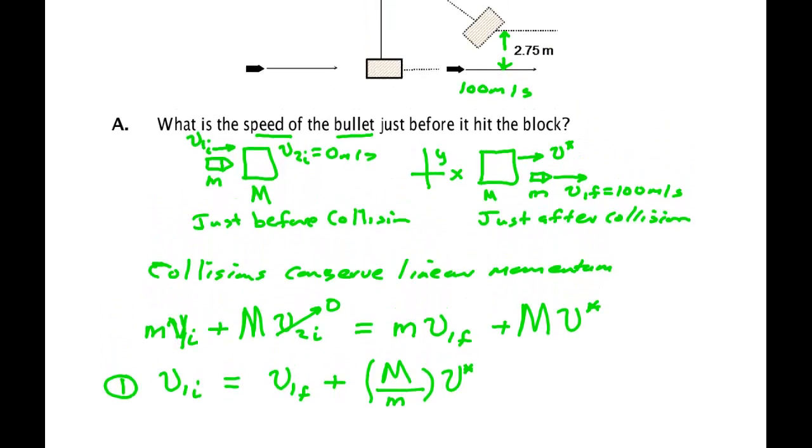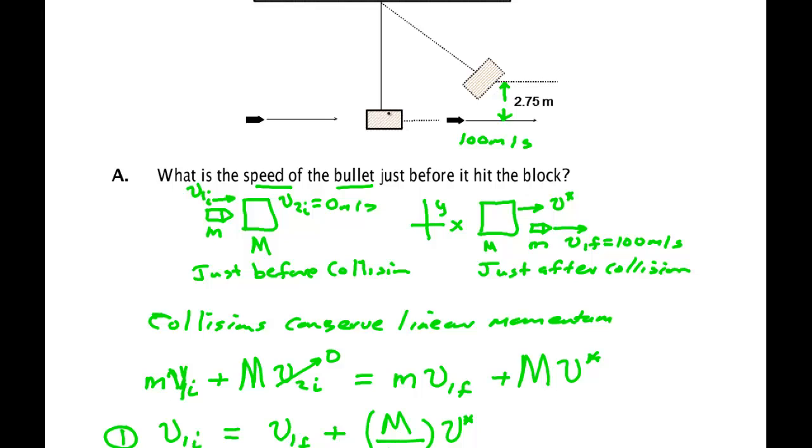Now what happened after the collision? After the collision to the block, the block swung up like a pendulum. And in that time there were two forces acting on it. One was the tension of the string and one was gravity. Gravity is a conservative force.